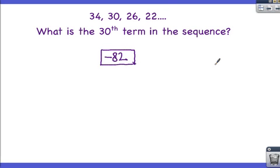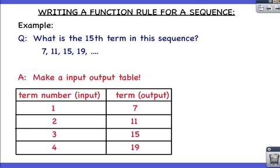Hopefully you arrived at these answers using some method other than listing them out to the 30th, 50th, or 100th term. I'm going to show you just two of many ways to solve these types of problems. One way is to write a function rule for the sequence. You can make an input-output table where the inputs are the term numbers and the outputs are the actual terms. Our first term is 7, so the input is 1 and the output is 7.